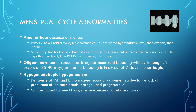A deficiency of FSH and LH can cause secondary amenorrhea due to lack of sex steroid production — estrogen and progesterone. Estrogen matures the egg and builds up the uterine lining, while progesterone prepares the uterine lining for implantation. If these hormones aren't present, there is no cycle.